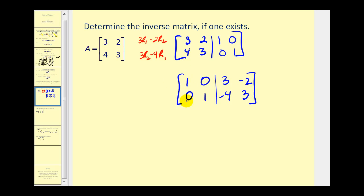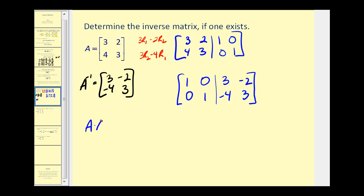Notice now the left side is the identity matrix, which means the right side is the inverse of matrix A. So A inverse is the matrix with elements 3, negative 2, negative 4, 3. Remember, this means A times A inverse should equal the identity matrix, and A inverse times A should also equal the identity matrix. Let's check this on the calculator.